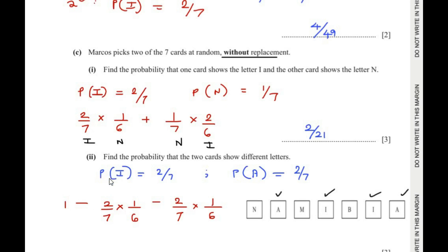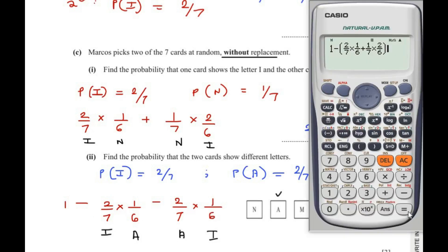So: 1 minus P(both same). If Marcos picks I first (2/7), then the second pick is also I with 1 remaining out of 6, giving 1/6. If he picks A first (2/7), then the second pick is also A with 1 remaining out of 6, giving 1/6. So the answer is 1 − (2/7 × 1/6) − (2/7 × 1/6) = 19/21.